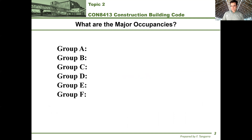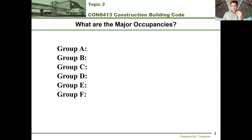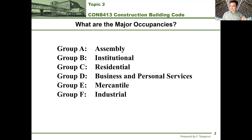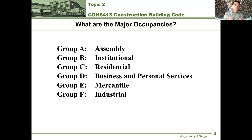So what are the major occupancies? The building code identifies six major occupancies. They are grouped as letters A through F and are specifically: Assembly, Institutional, Residential, Business and Personal Services, Mercantile, and Industrial. Each letter represents that specific type of occupancy — for example, Group E always refers to mercantile type buildings.